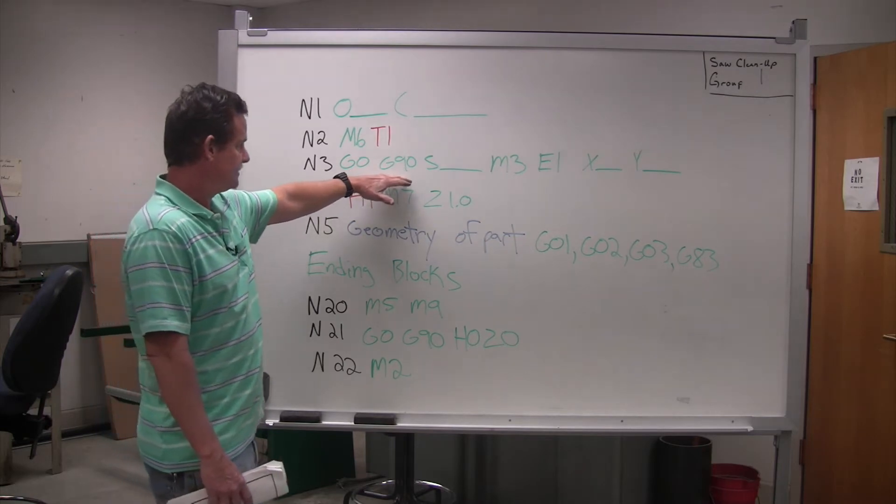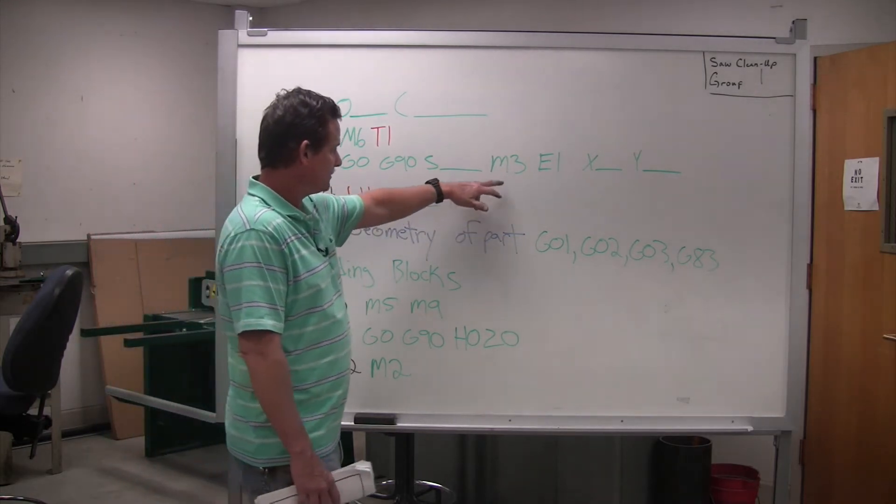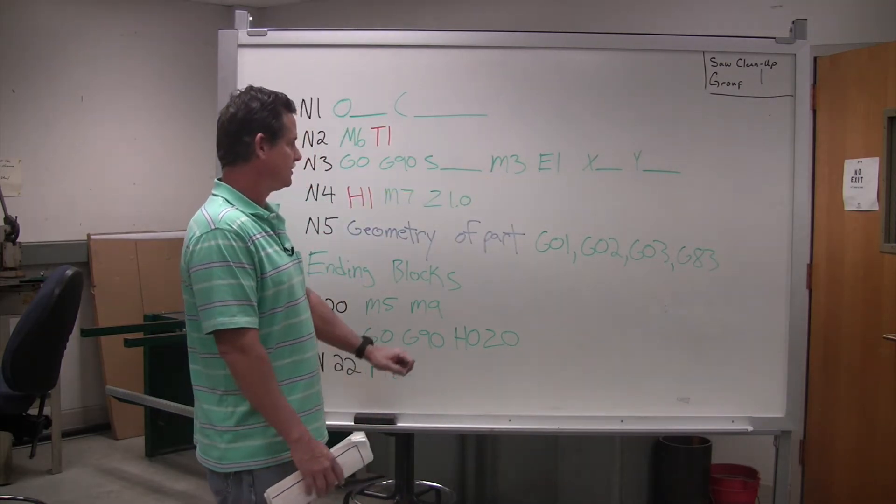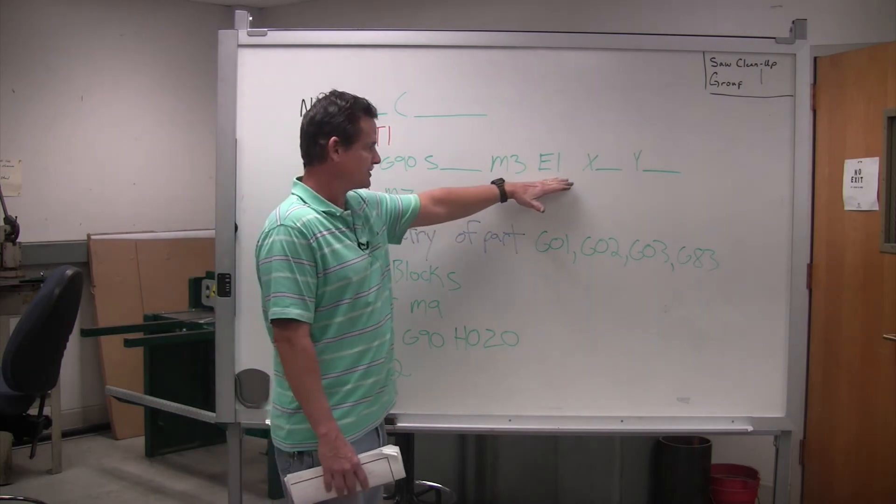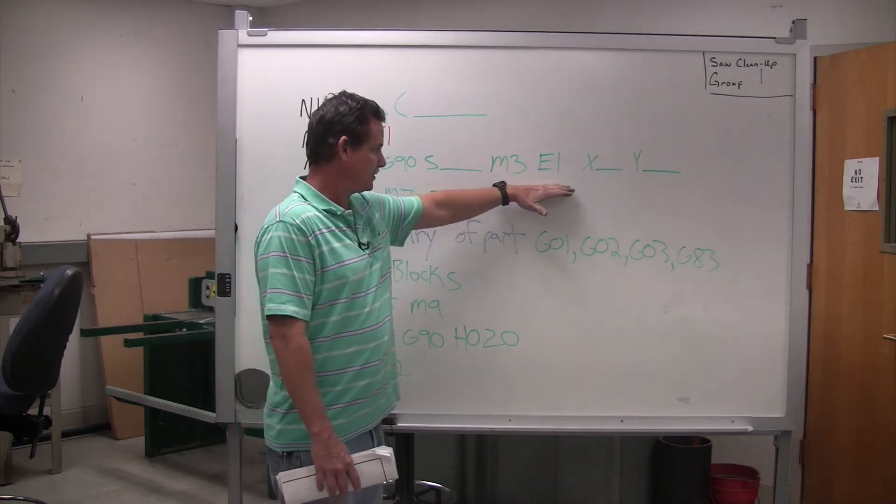And you write this line. G0, G90, your speed, S for your speed, M3, machine code, telling the machine to turn the spindle on. Your E number. This is an offset. I covered that in a prior video. You have to determine an offset to tell your program where to start at.